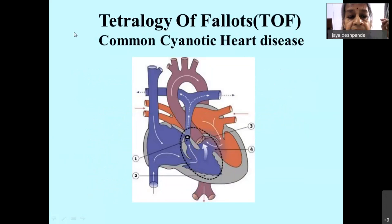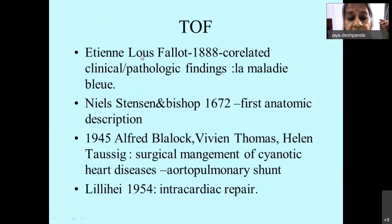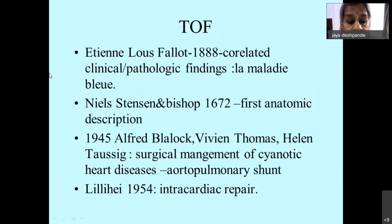Today we will look at the anatomy and physiology of Fallot's tetralogy. It is a common congenital cyanotic heart disease, first described anatomically by Stenson and Bishop in 1672. Louis Fallot in 1888 correlated the clinical and pathological findings and called it 'la maladie bleue.' It was only in 1945 that Blalock, Taussig and others introduced surgical management with aortopulmonary shunts, and in 1954 Lillehei attempted intracardiac repair.